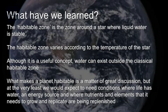We've also learned that what makes a planet habitable is a matter of great discussion. But at the very least, we would expect to need conditions where life has water, an energy source, and where nutrients and elements that it needs to grow and replicate are being replenished. These conditions allow us to assess other planets as abodes for life and also use the criteria for habitability to assess planets orbiting other stars.